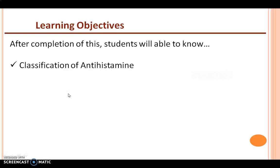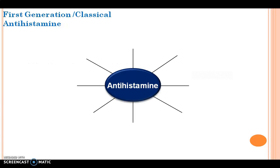After completion of this presentation, learners will be able to know the classification of antihistamines. Antihistamines are nothing but the H1 antagonists. H1 antagonists competitively inhibit the action of histamine on tissues containing H1 receptors. These are broadly classified as 1st generation antihistamines and 2nd generation antihistamines.